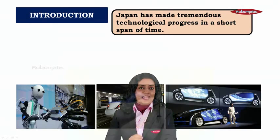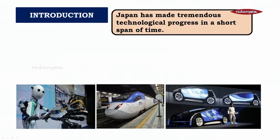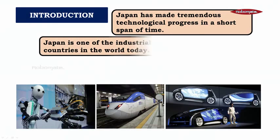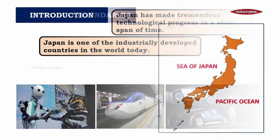Japan has made tremendous technological progress in a short span of time. Japan is one of the industrially developed countries in the world today.